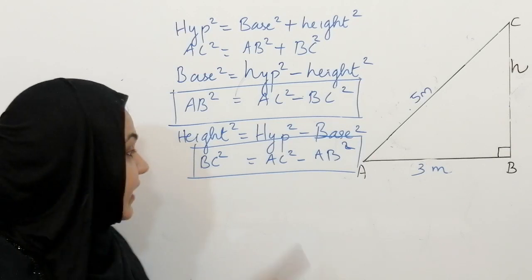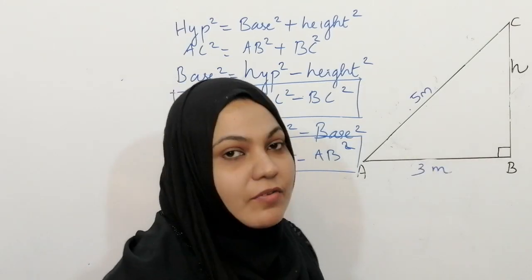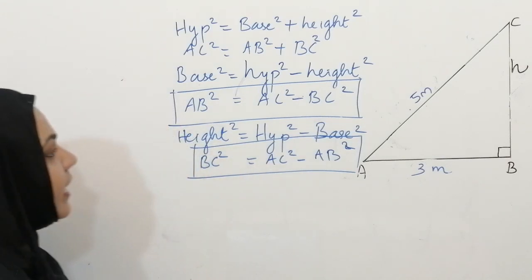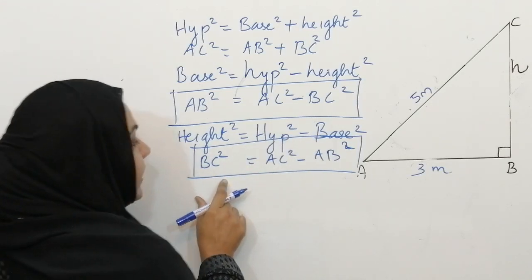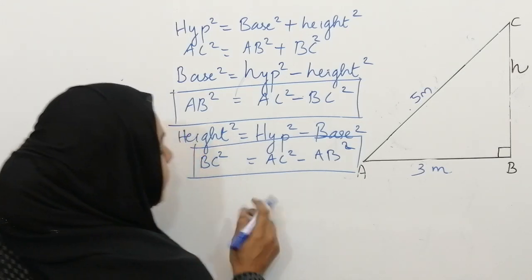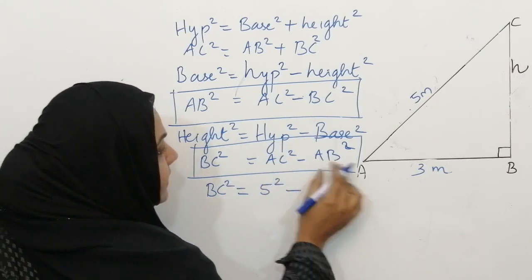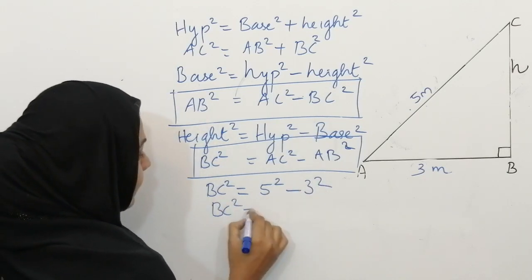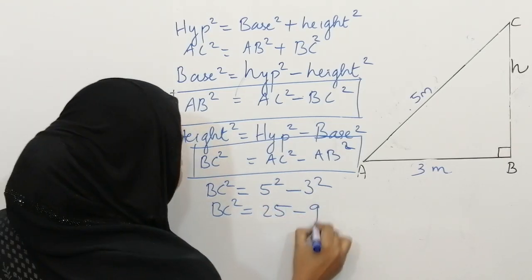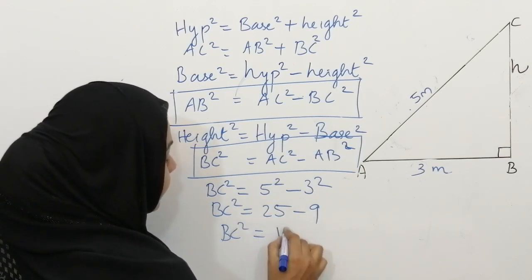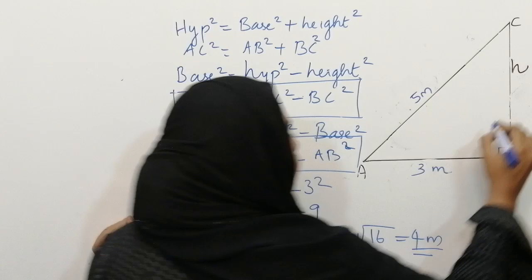This is our second question related with finding height square. AC is 5 meters and AB is 3 meters. We have to find BC, that is our height. BC square is equal to AC square minus AB square, that is 5 square minus 3 square, which is 25 minus 9, that is 16. So BC is equal to square root of 16, that is 4 meters. We found the value of height, 4 meters.